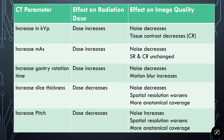If you increase the gantry rotation time — the amount of time it takes for the tube to make one rotation around the patient — you're essentially slowing the x-ray tube down. Instead of 0.3 seconds per rotation, it might be 0.5 or 0.6 seconds. As the tube moves more slowly, dose will increase because the patient is exposed to the x-ray beam for longer. More x-rays hit the detector, so noise will decrease, but motion blur will increase, which will decrease image quality a little bit.